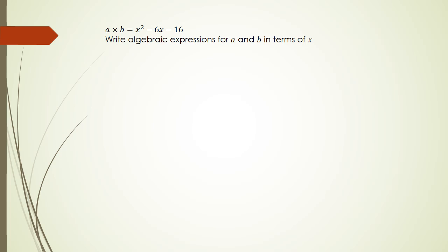Let's have a look at the next question — similar type. We've got a times b equals x squared minus 6x minus 16, and we're trying to work out expressions for a and b in terms of x. So we're going to factorize this.